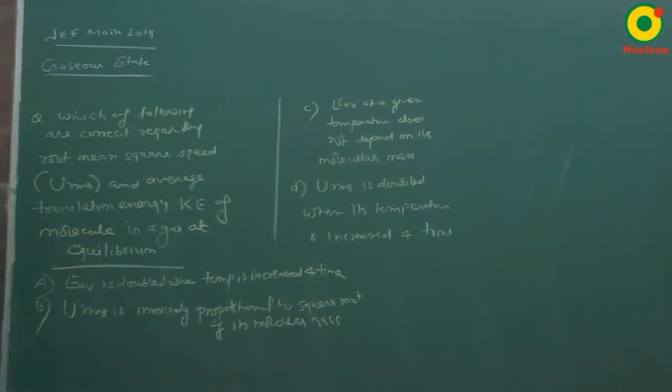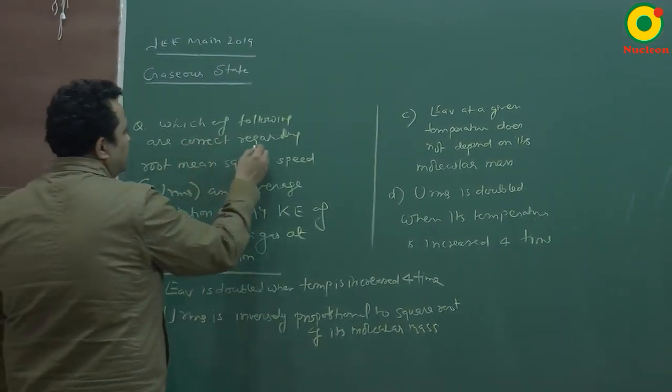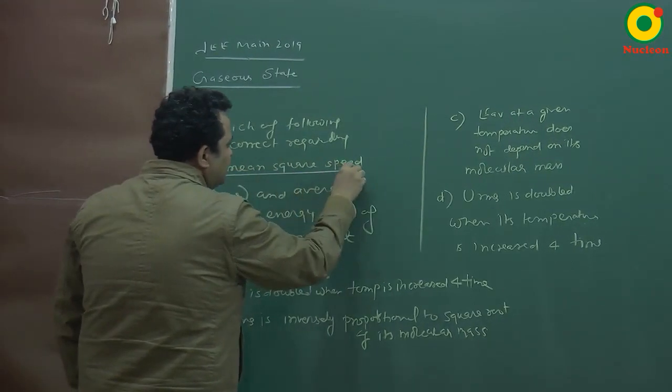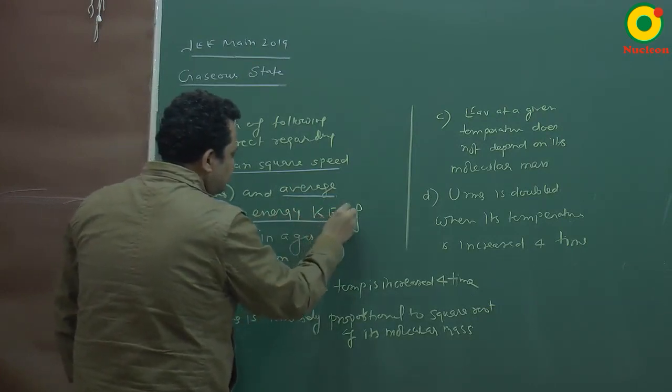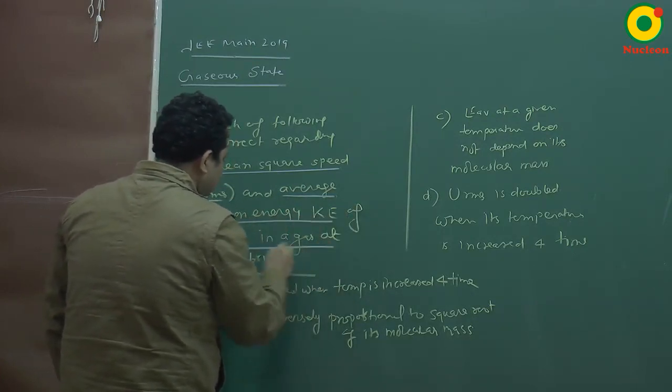Let's start with the next question, which of the following are correct regarding root mean square speed, URMS, and average translation kinetic energy of molecule in a gas at equilibrium.